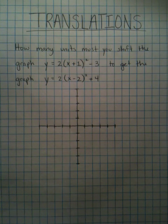Let's look at another word problem with translations. It says, how many units must you shift the graph y equals 2 times the quantity x plus 1 squared minus 3 to get the graph y equals 2 times the quantity x minus 2 squared plus 4?